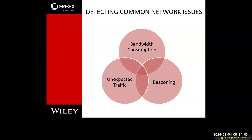Detecting common types of network issues: bandwidth consumption, unexpected traffic, command and control beaconing. A lot of today's monitoring has come from network troubleshooting tools that have been around for decades. We would use them to troubleshoot network problems, isolate issues with a network card, a specific switch port, or routing protocol misconfigurations. These tools have always been good at collecting data — we're just using that data collection through a different lens for security purposes.